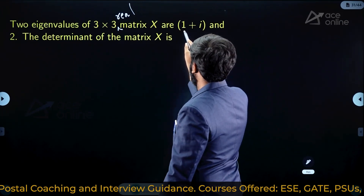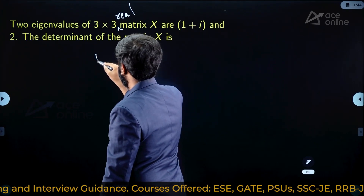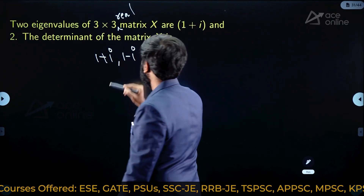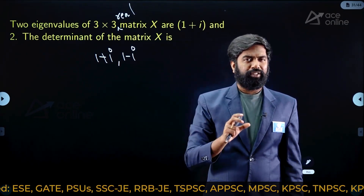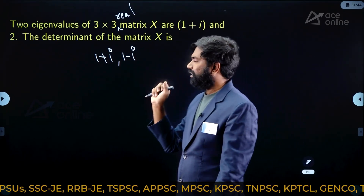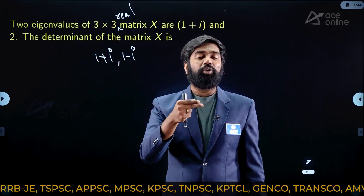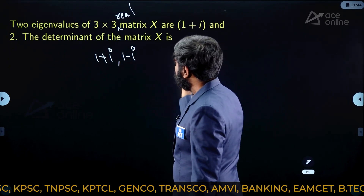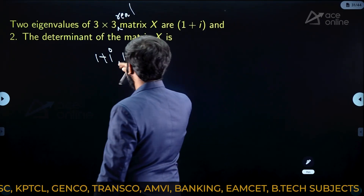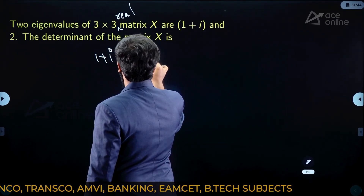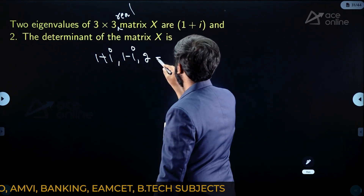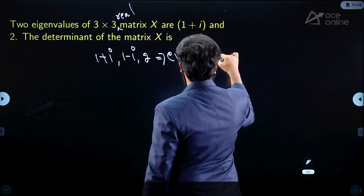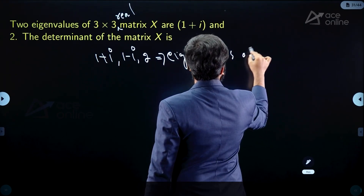If it is a real matrix and one of the eigenvalues is 1+i, then the other eigenvalue has to be 1-i. For a real matrix, complex eigenvalues come in conjugate pairs. So we have eigenvalues 1+i, 1-i, and 2.